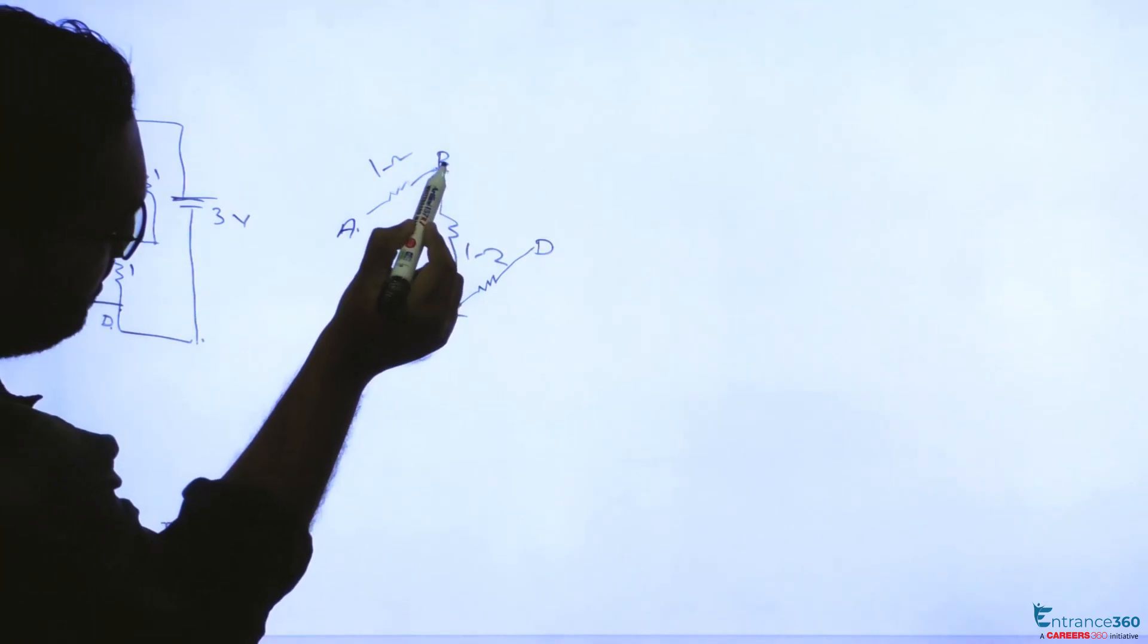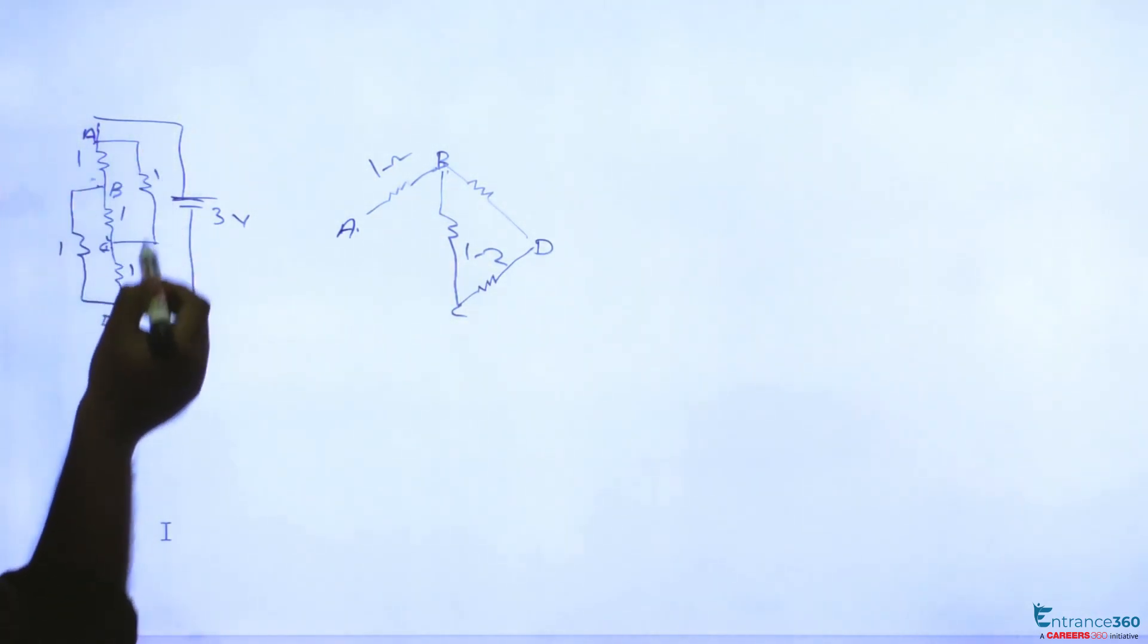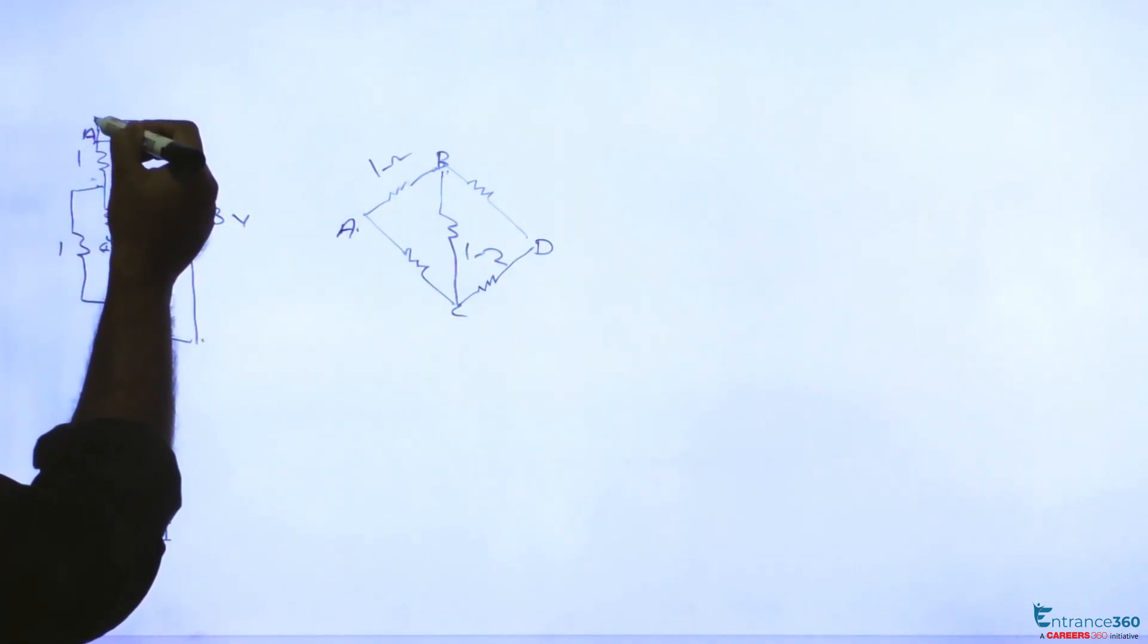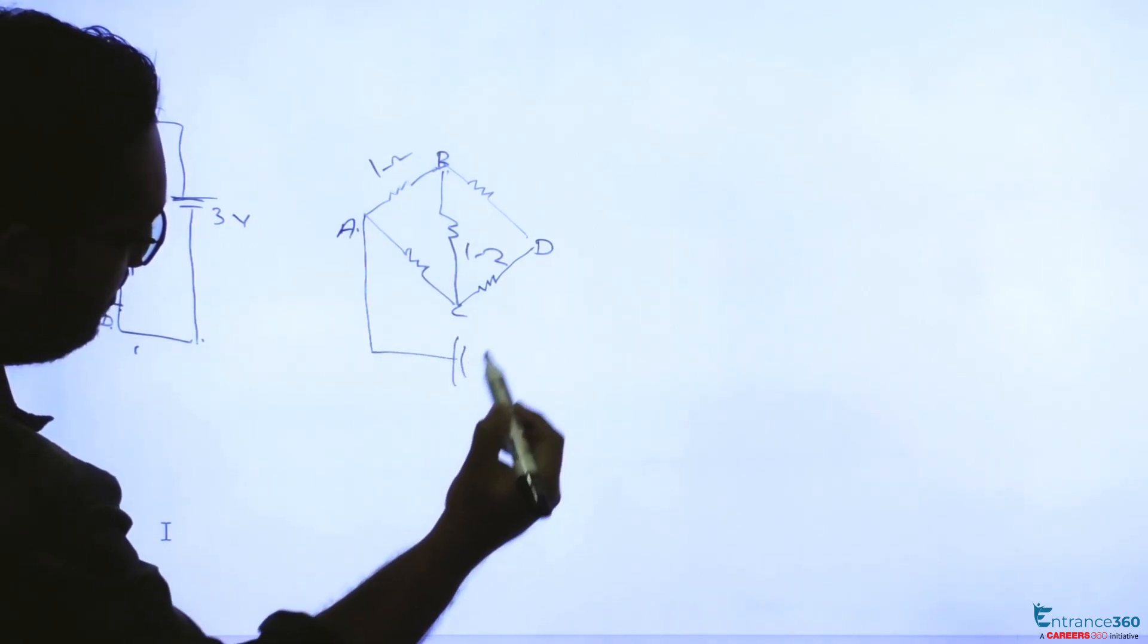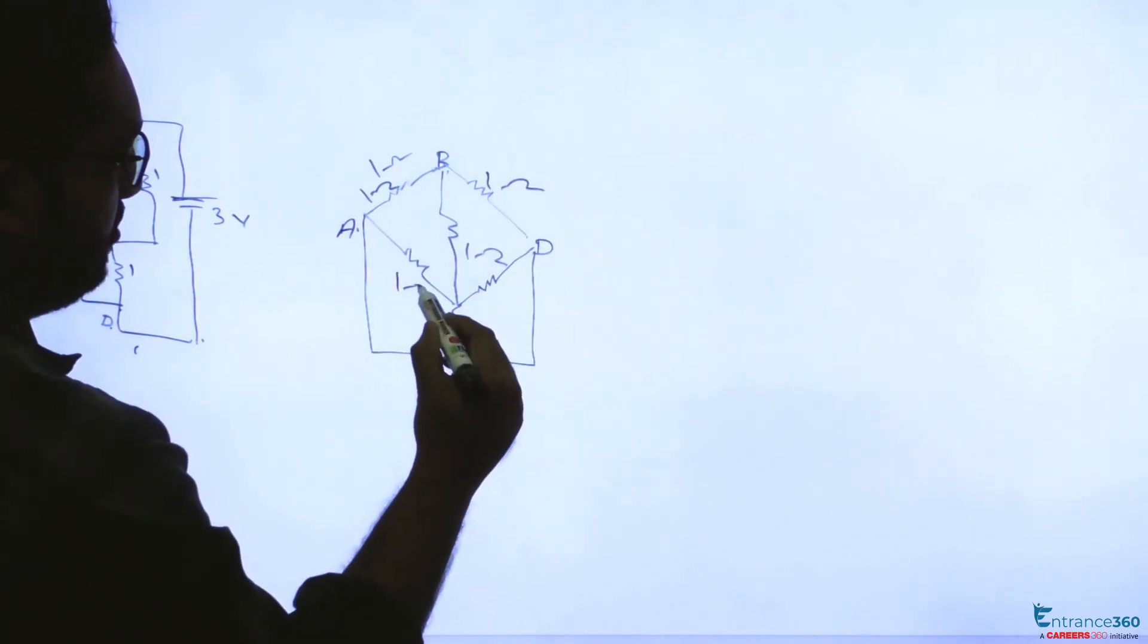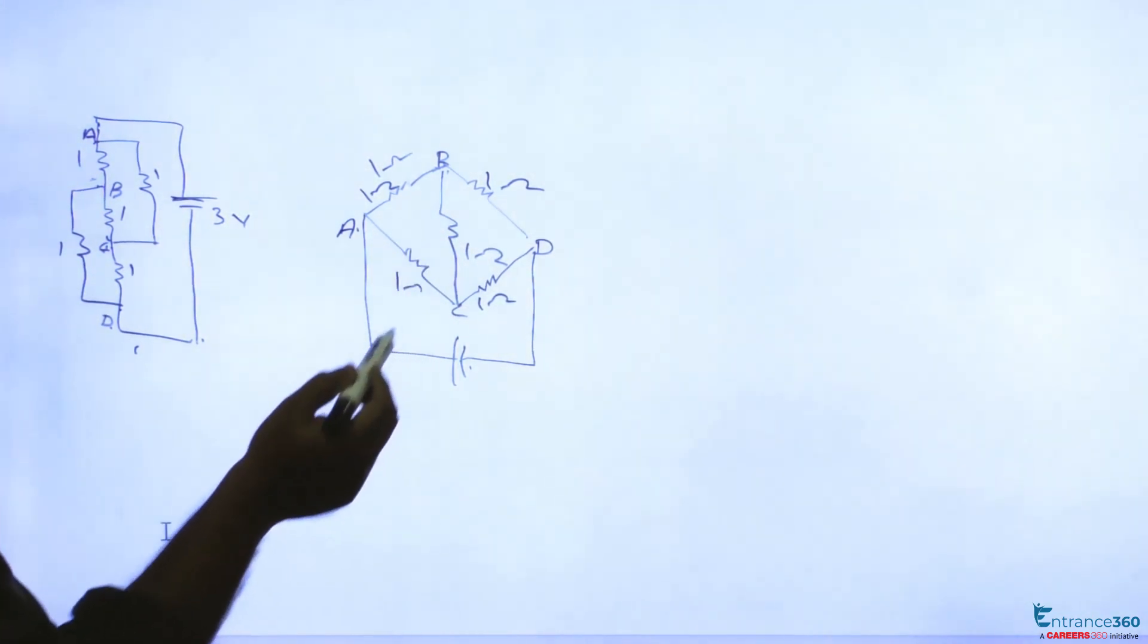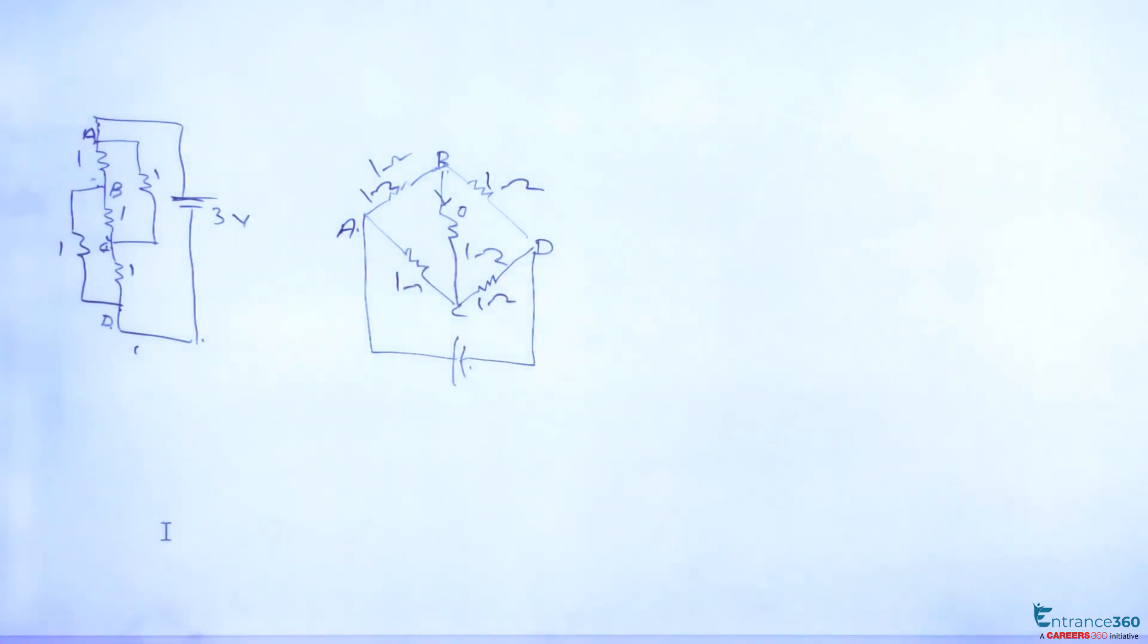Between C and D there is one ohm. Between B and D one ohm is there. Then between A and C one ohm is there. And potential is applied across A and D. Each resistance is one ohm, so it looks similar to a Wheatstone's bridge, a balanced Wheatstone's bridge. So current through this branch will be zero.